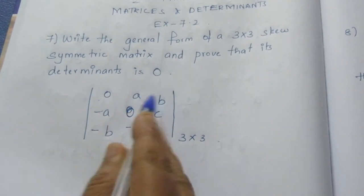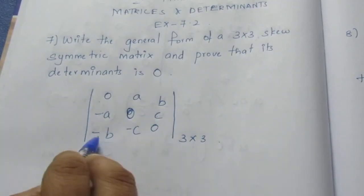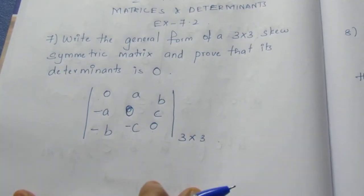So 0, a, b, minus a is 0, c, minus b, minus c is 0. This is a skew symmetric matrix.